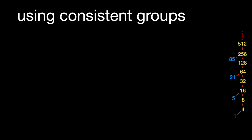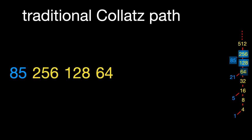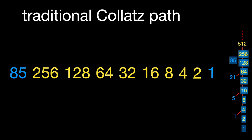Using the standard rules C1 and C2 on the starting point of 85 would yield 85, 256, 128, 64, 32, 16, 8, 4, 2, 1, with an unbroken stretch of 8 even numbers.